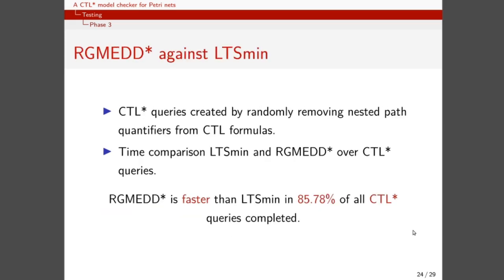Then, we compared the output of RGMED-STAR against LTSmin on CTL-STAR queries, which were generated by removing some of the quantifiers from the CTL formulas of the model checking contest. For these queries, we didn't have any expected result, so we limited our comparison to a timed comparison, and we found RGMED-STAR to be faster than LTSmin in most of the cases. We attribute this difference in performance to the conversion between CTL-STAR and mu-calculus, which is performed by LTSmin. To our knowledge that conversion is a heavy computational process, and RGMED-STAR, by avoiding it, is able to solve queries faster.